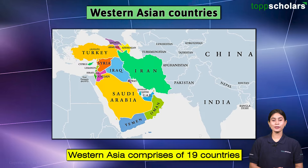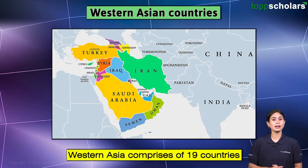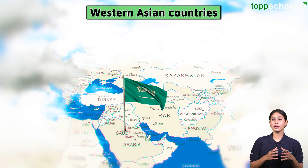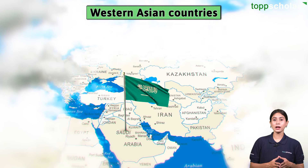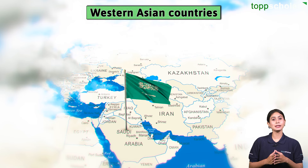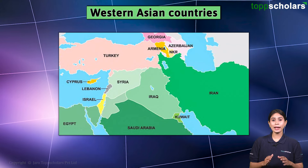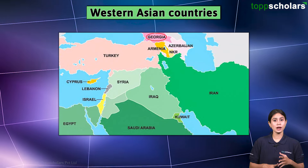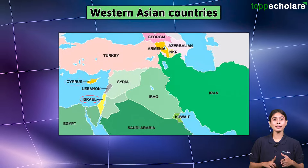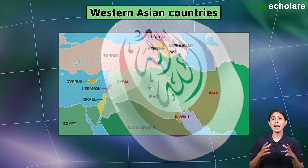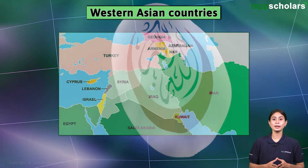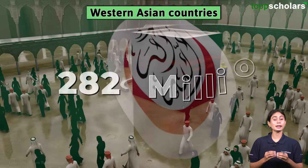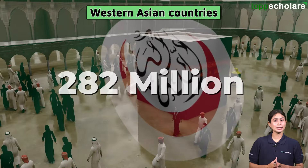Western Asia comprises 19 countries. It includes the Arabian Peninsula and Middle Eastern countries. All except Armenia, Georgia, Israel, and Cyprus have a Muslim majority, with a total population of 282 million.